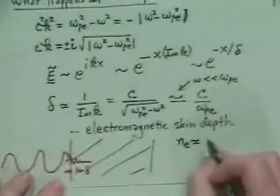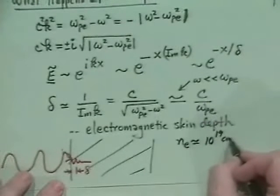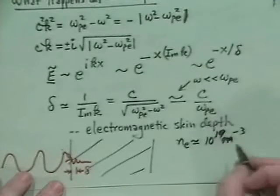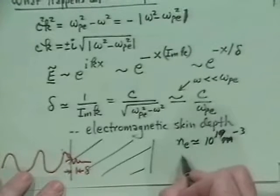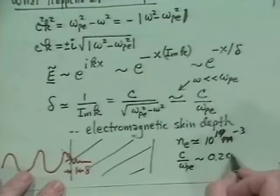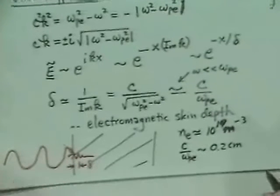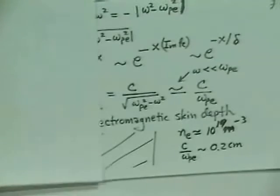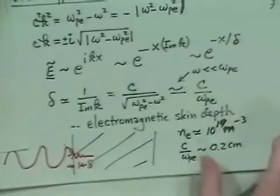How big is δ? If we take n_e ≈ 10¹⁹ per cubic meter — a typical laboratory plasma density — it turns out that c/ω_pe is about 0.2 centimeters, or two millimeters. So it's a very small distance. These are then some properties of electromagnetic waves; now let's talk about some applications of these ideas.